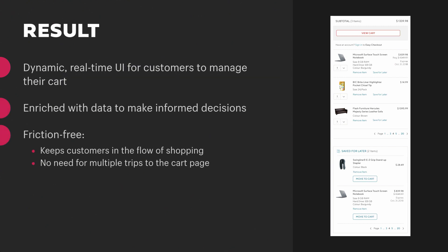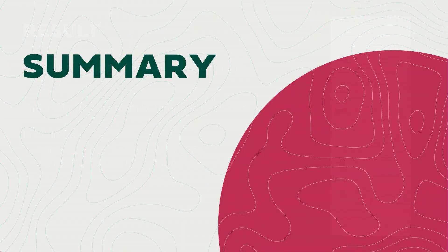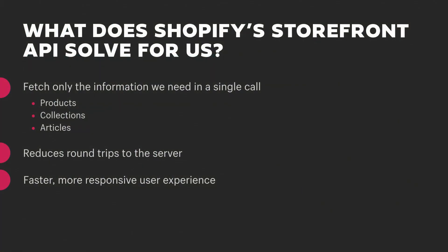The result is a dynamic, real-time user interface for customers to manage their cart, enriched with the data they need to make informed decisions, keeping customers in a friction-free flow of shopping. So what does the Shopify Storefront API solve for us? It allows us to pull only the information we need about multiple products, collections, or articles in one single call. It reduces the number of round trips to the server, and fewer round trips means a smoother, more responsive user experience.